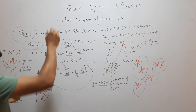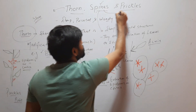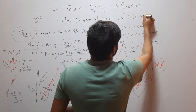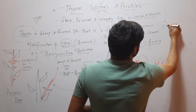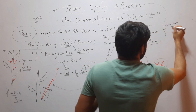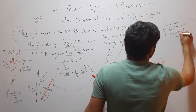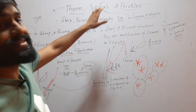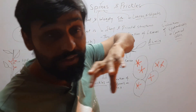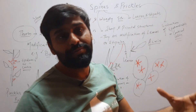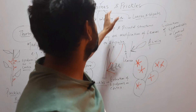So these are the three terms. Thorn is simply a modification of stem. Spines are simply a modification of leaves and stipules. Prickles are an extension of epidermal cells or cortical cells. So to summarize: thorn is a pointed structure that is a modified stem; spines are pointed structures that are a modification of leaves or stipules; and prickles are an extension of epidermal cells or cortical cells. This is the difference between thorn, spine and prickles.